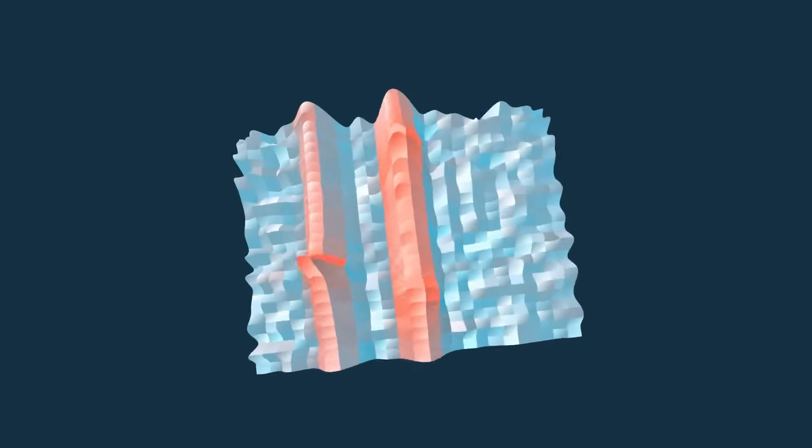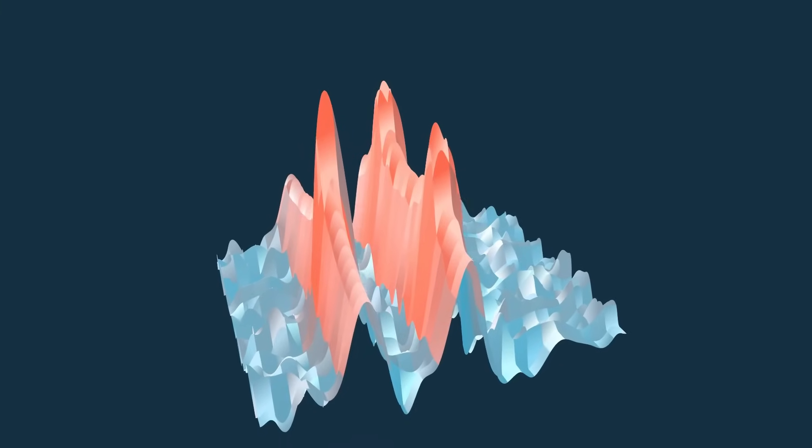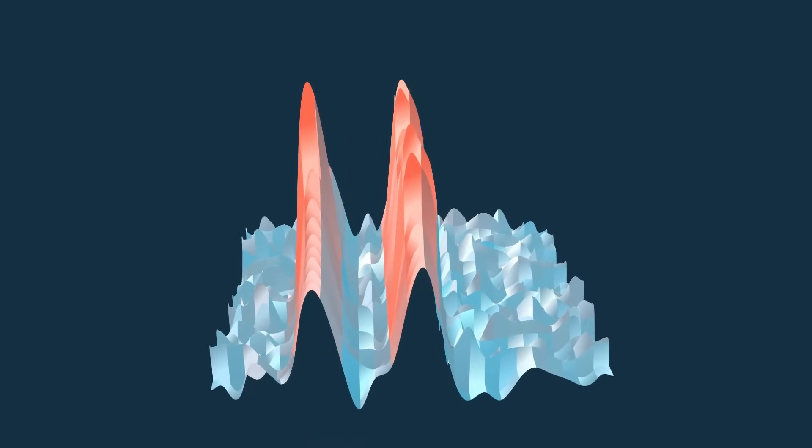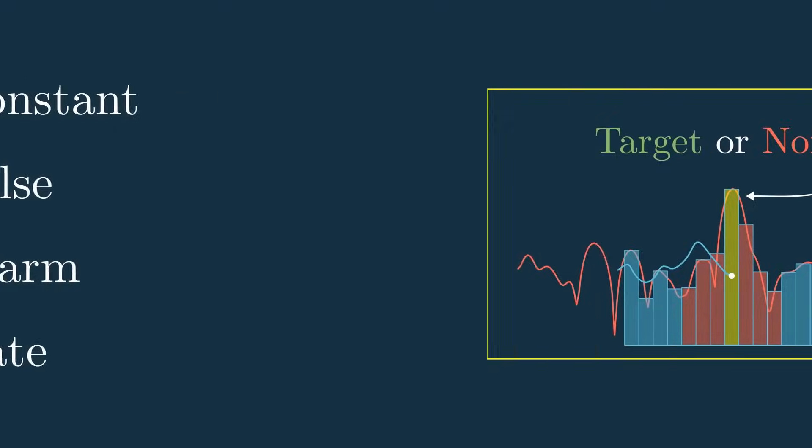You could even take this and plot it in three dimensions as a surface, which in my opinion looks even cooler and might make it more obvious where the targets are. From here you could then apply something like CFAR to discriminate between the targets and the noise, which I covered in the last video, or move on to other processing techniques.